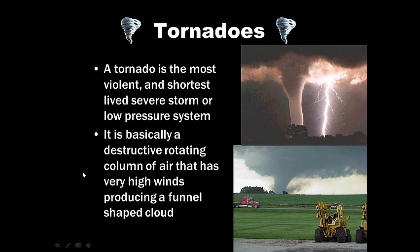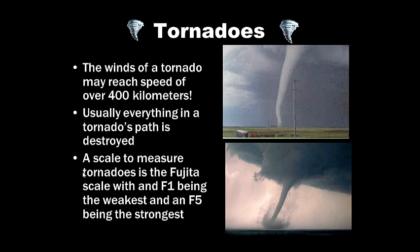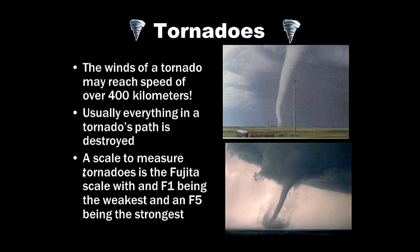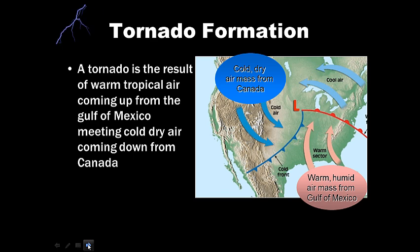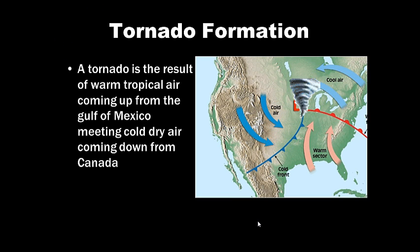A tornado is the most violent and shortest-lived severe storm, or low-pressure system, in the world. It is a destructive rotating column of air with very high winds producing a funnel-shaped cloud. Winds of a tornado can reach up to 400 kilometers per hour in an F5. We use the Fujita scale — F1 being the weakest, F5 being the strongest. Tornadoes result from really cold, dry air coming down from Canada meeting warm, humid air from the Gulf of Mexico, creating extreme low-pressure systems in what we call tornado alley.